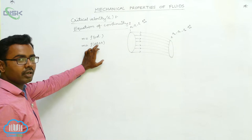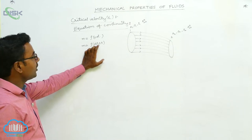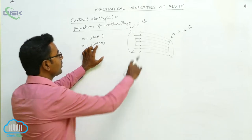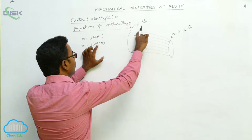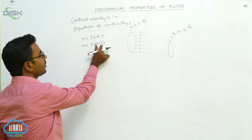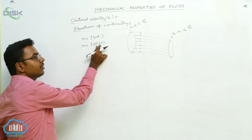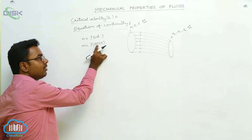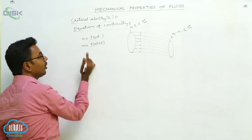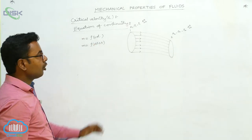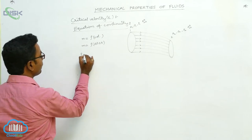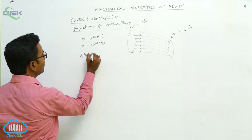Velocity can be written as distance divided by time, so distance equals velocity times delta t. Area of cross-section times distance gives volume — the distance is like the length of a cylinder, so area of cross-section times length equals volume. Therefore, A times V times delta t is the volume, and mass equals density times A times V times delta t.